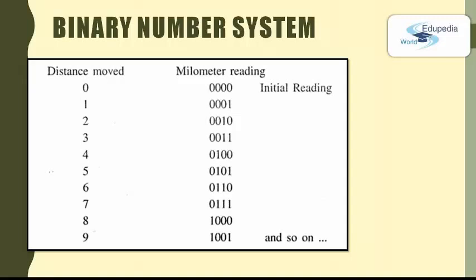But if we use a 5 digit milometer, it will be like 10000. So that's how the binary number system behaves.